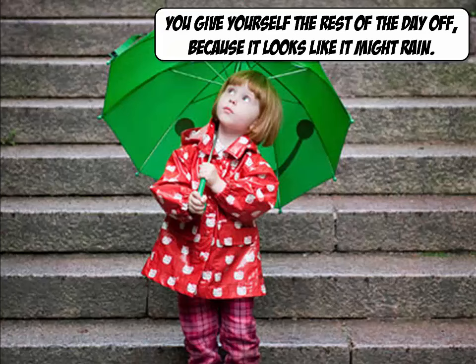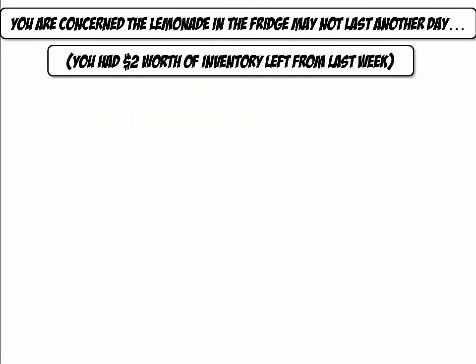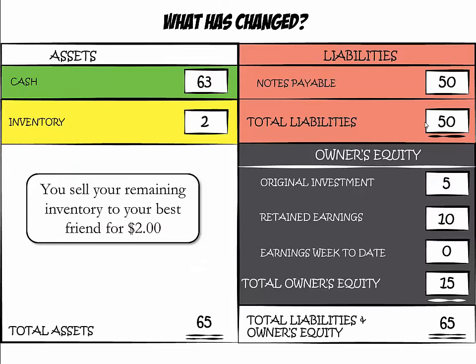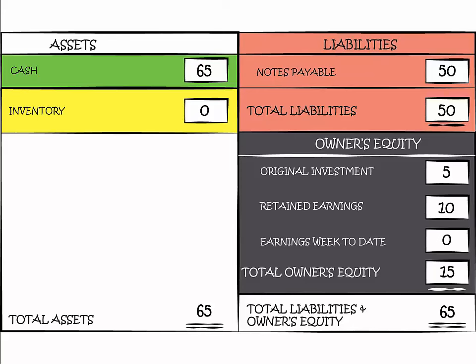It looks like it might rain, so you decide you will not sell lemonade today. However, you are concerned that your $2 of lemonade inventory that you made last week might not last another day, so you sell your remaining inventory to your best friend for $2. Inventory went down from $2 to $0, and $2 was added to cash. Your earnings were not affected because the cost of goods sold equaled your sales revenue, so your gross profit for the leftover lemonade was zero.